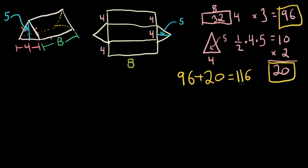Now I take all those numbers and add them up. So 96 plus 10 plus 10 gives us 116 units squared. Those are some of the classic surface area ones. You can get into more complex ones — octagon ones, pentagon ones, hexagons — it all kind of depends. But opening it up into a net is the key. Try and envision what it actually looks like and spend some time working on that.